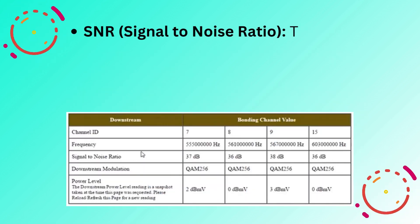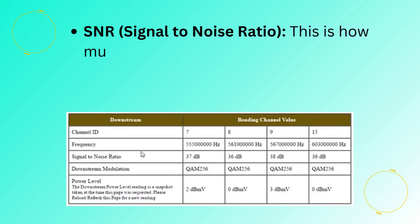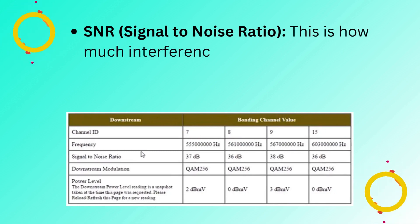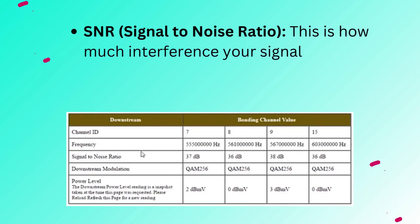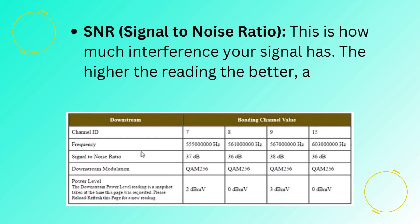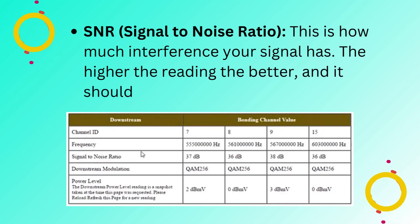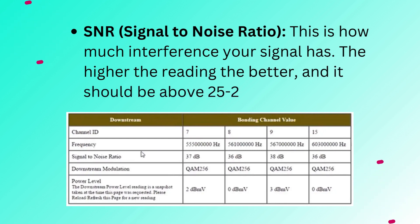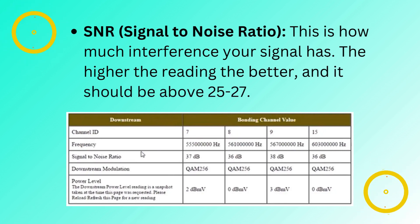SNR, or signal to noise ratio: this is how much interference your signal has. The higher the reading the better, and it should be above 25 to 27.